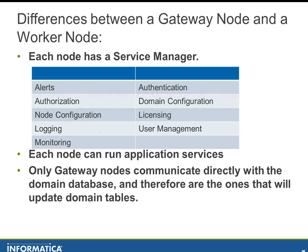First we'll talk about differences between a gateway node and a worker node — for the most part they're pretty similar. Every node, gateway or worker, has a service manager with a list of duties it takes care of, as shown in the chart in the middle of the screen. Every node can run application services, but only gateway nodes communicate directly with the domain database and therefore update the domain tables.